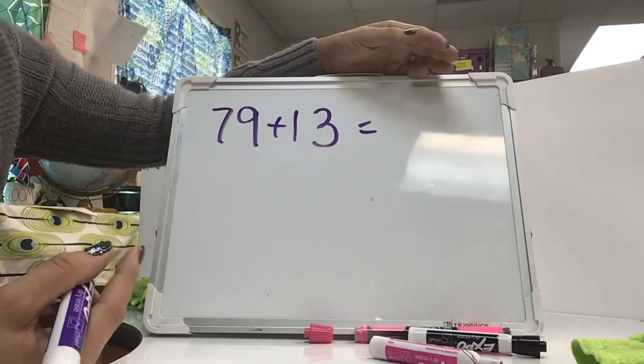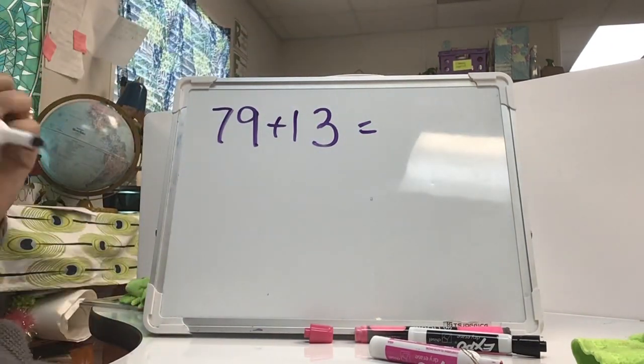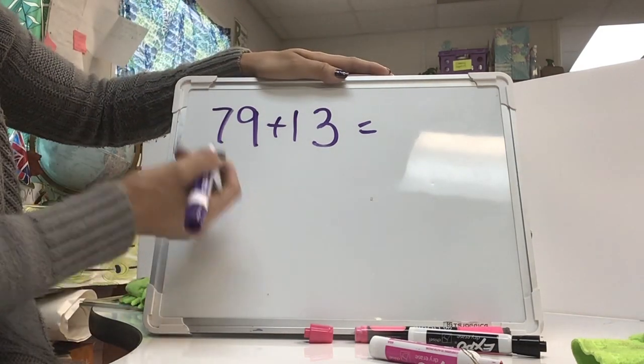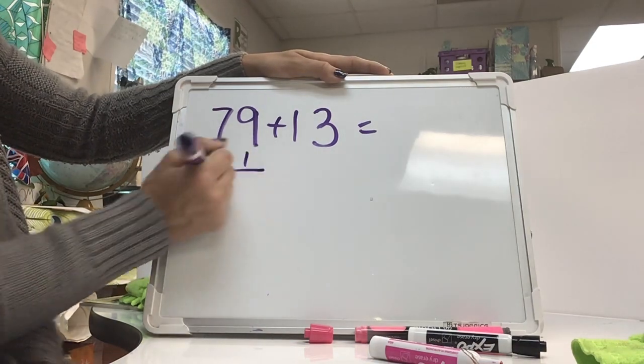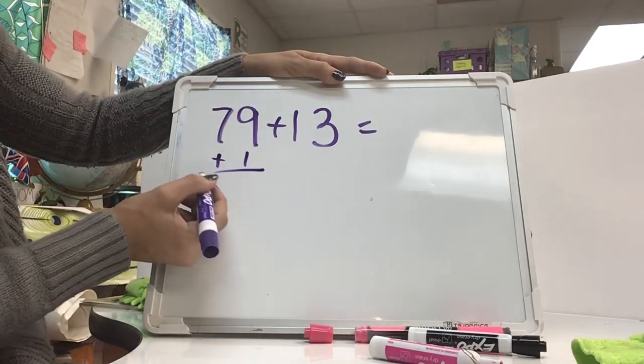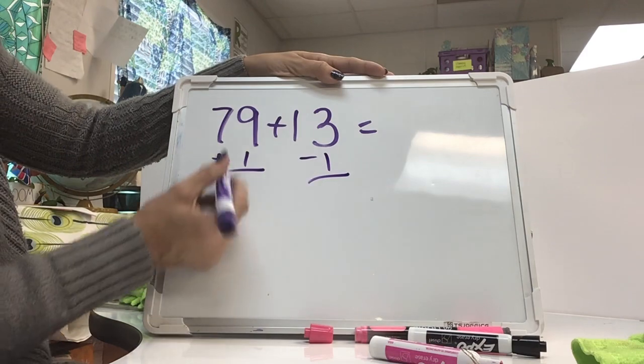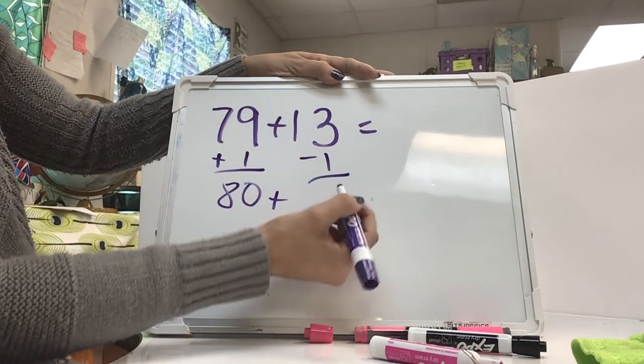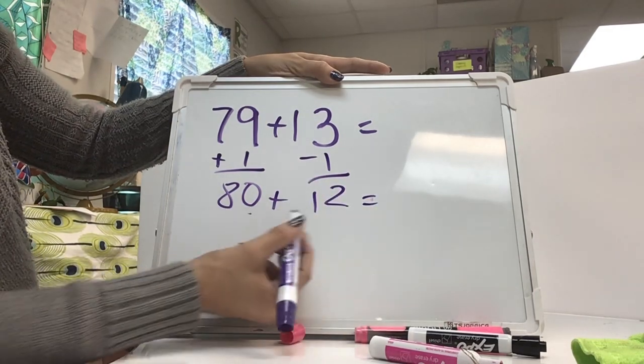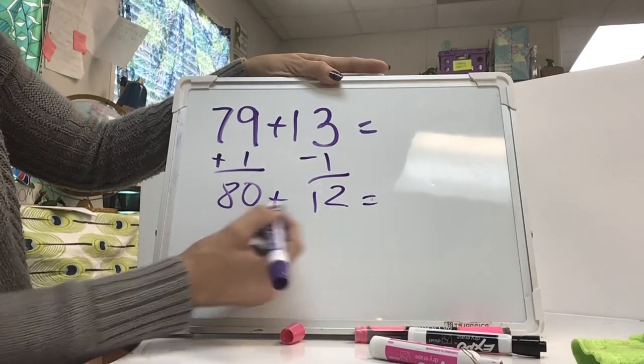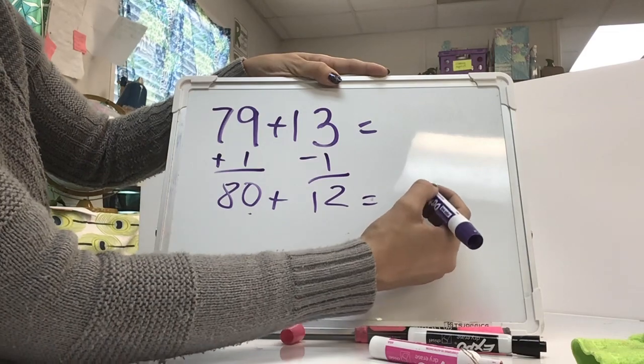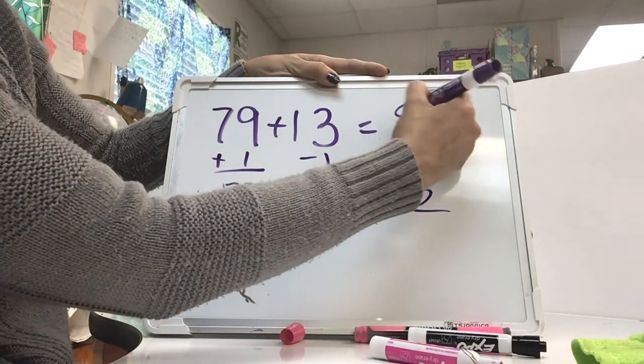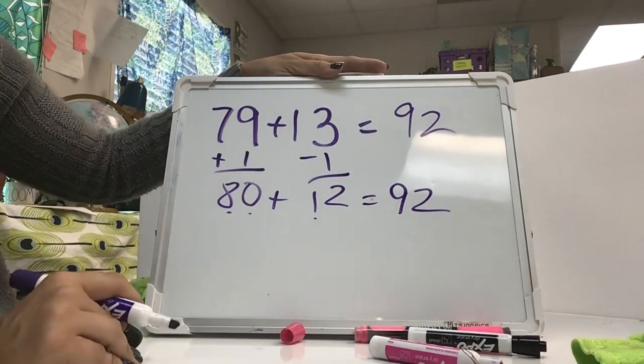So 79 plus 13, I know I can use compensation because if I added the 9 and the 3, it's going to be a number that's more than 10. It is a regrouping problem. 9 is really close to getting 79 to the next 10. So I'm going to do plus 1 and minus 1. 79 plus 1 more is 80. 13 take 1 away is 12. Again, we're starting with the ones place. 0 plus 2 is 2. And then 8 tens plus 1 ten is 9 in my 10s place. So the sum is 92.